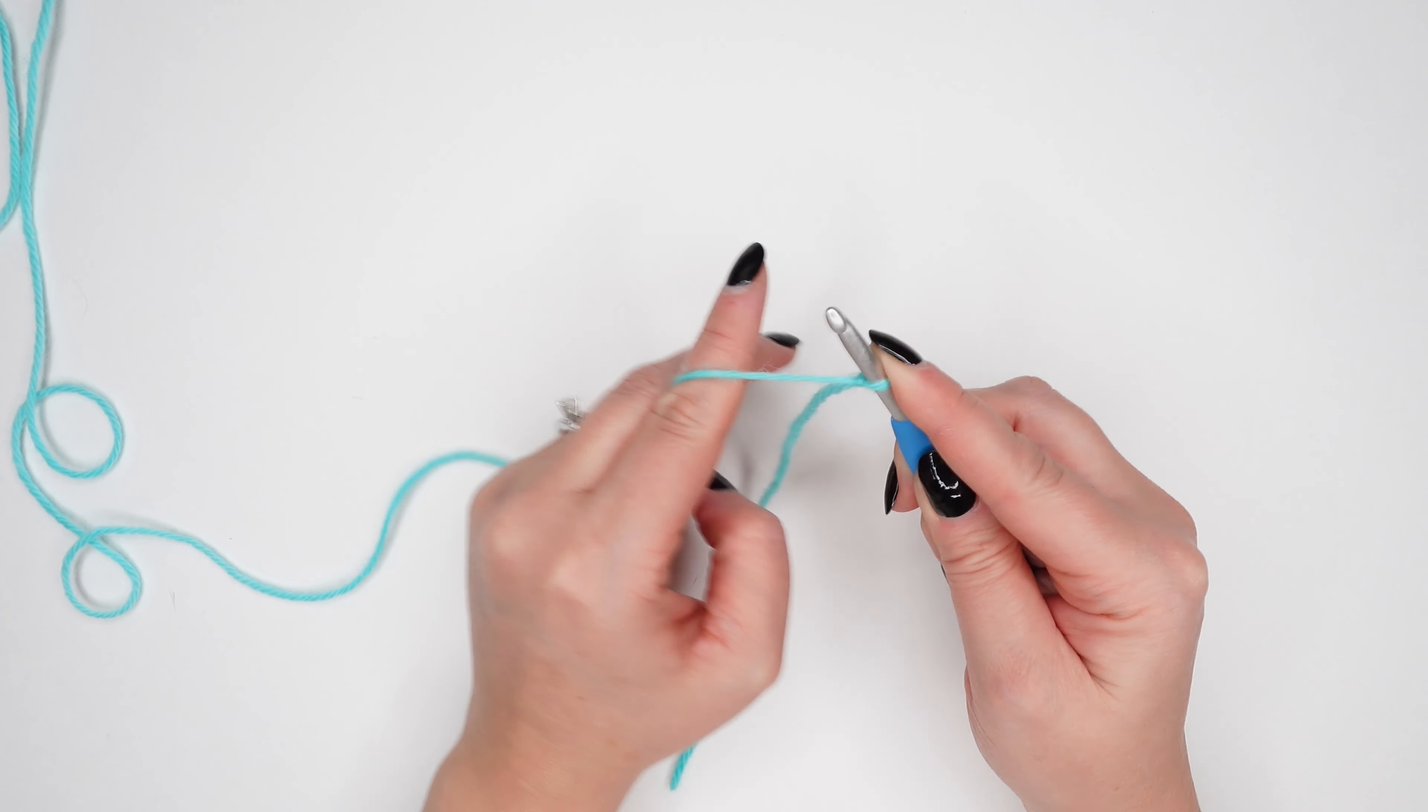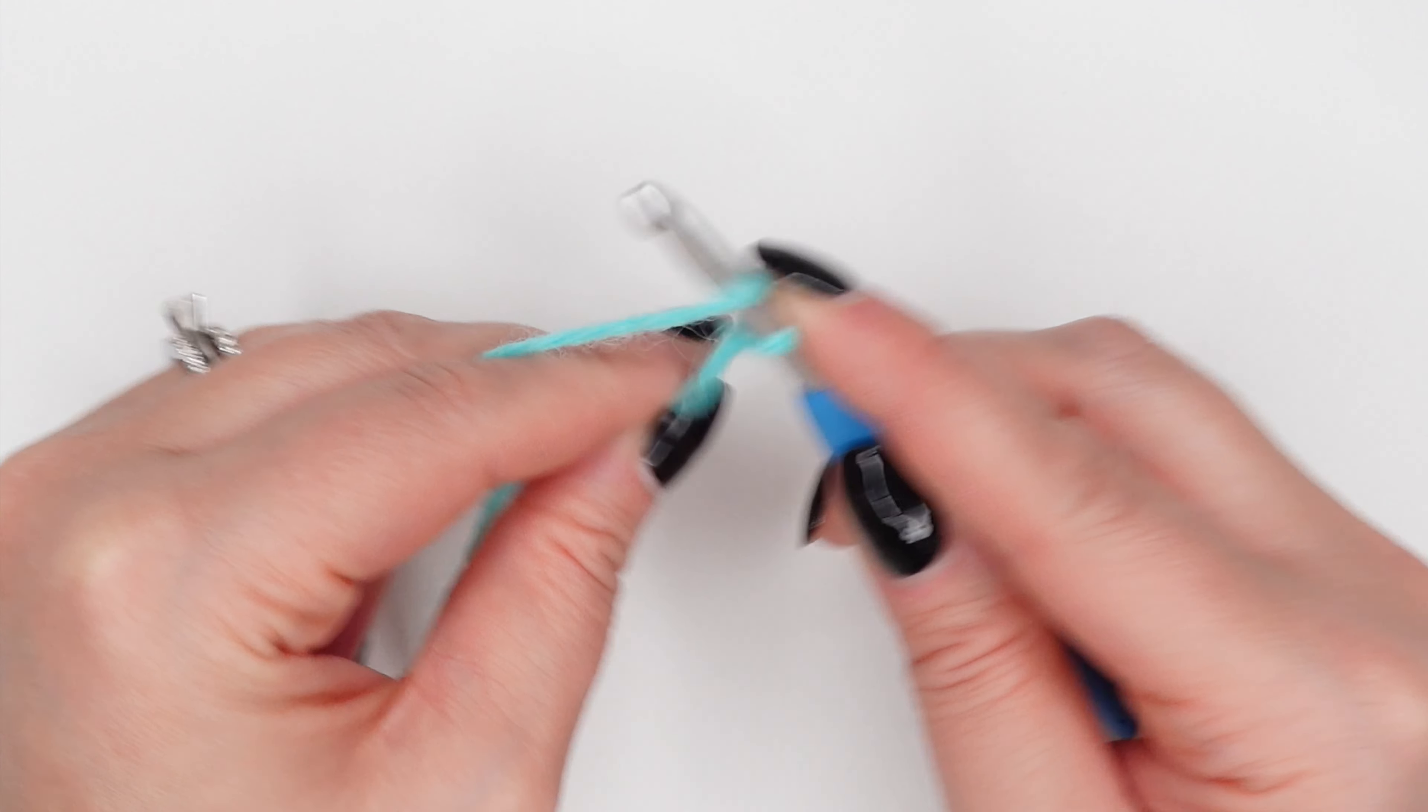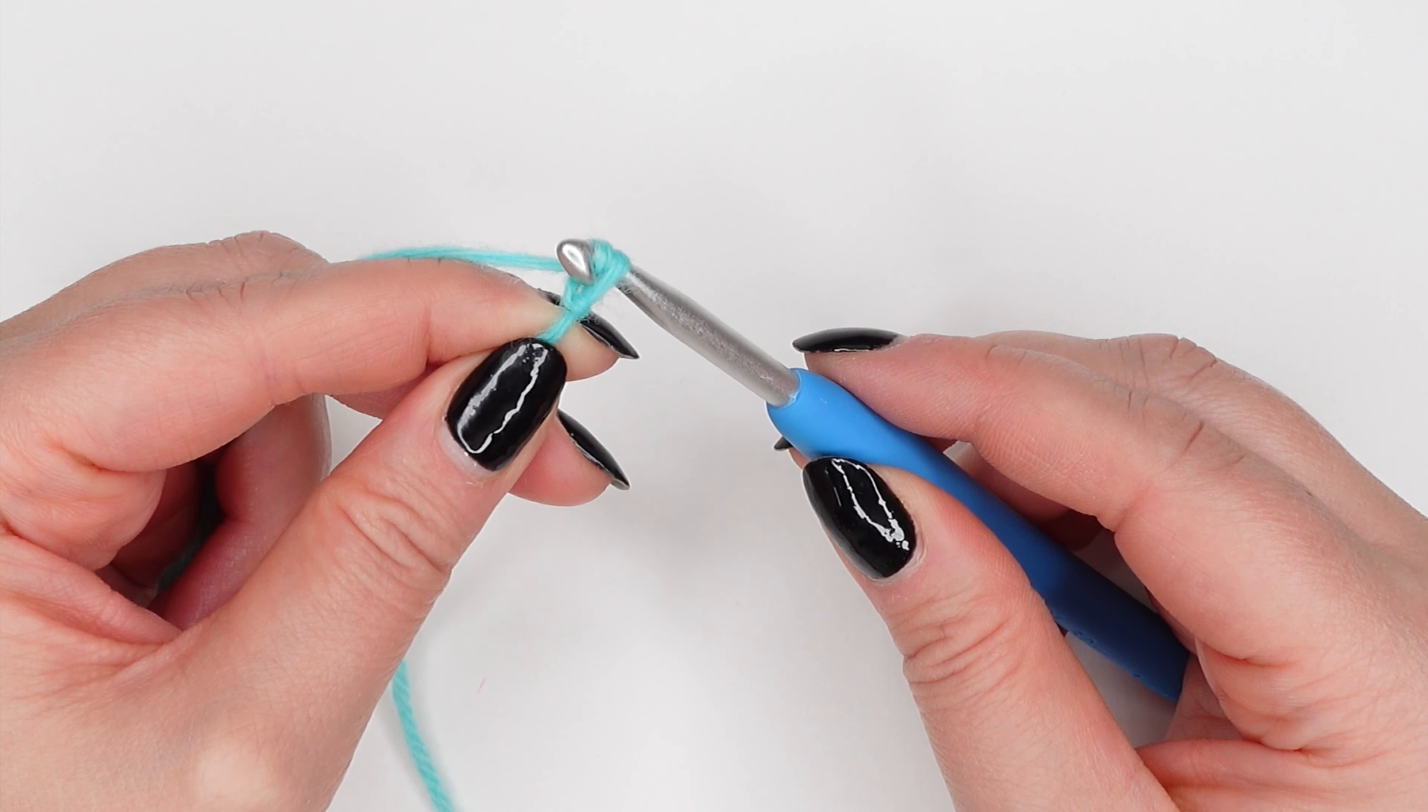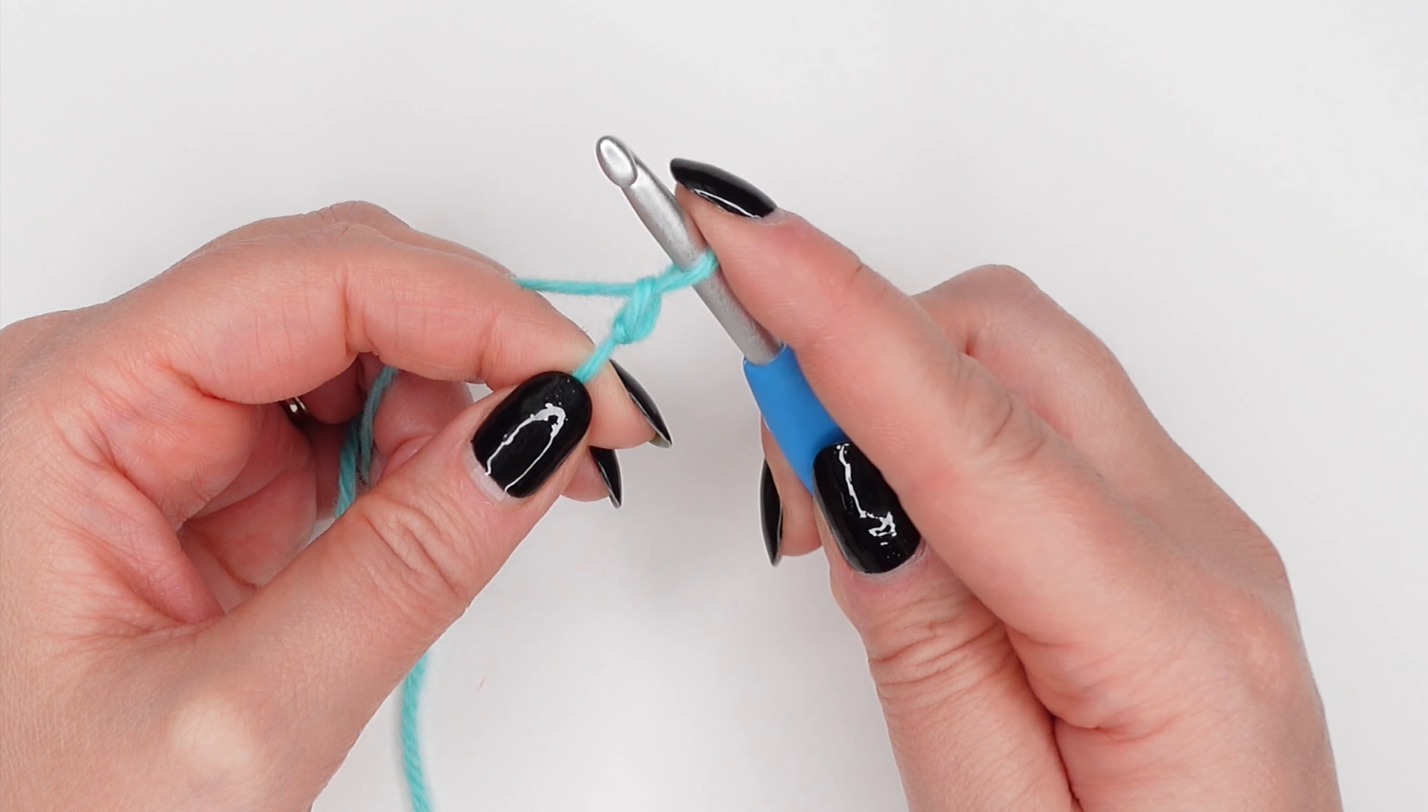Wrap your yarn around your hook from back to front. Use your thumb and pointer finger to gently pull down on the yarn tail to give yourself a little leverage. Slightly tilt your crochet hook downward to catch the yarn on your hook and pull it through the loop that was already on your hook. You've just made your first foundation chain.